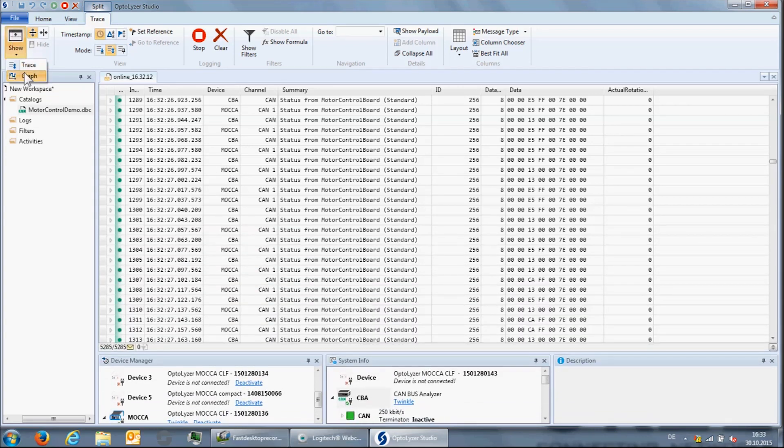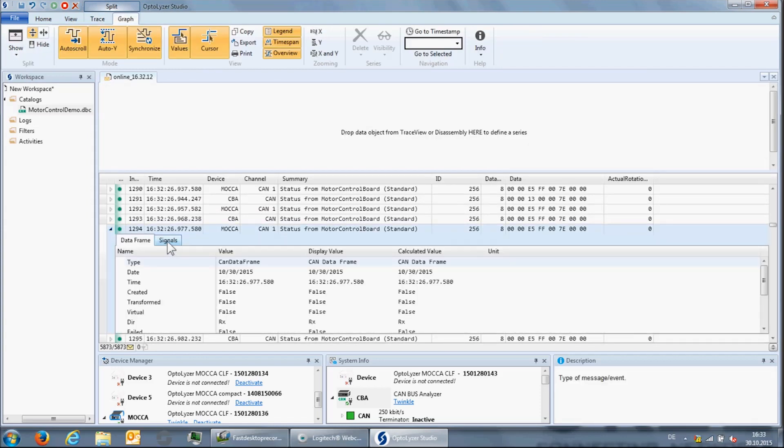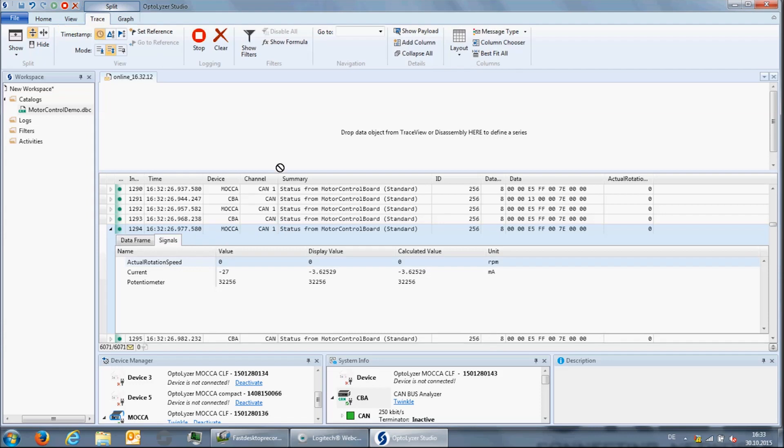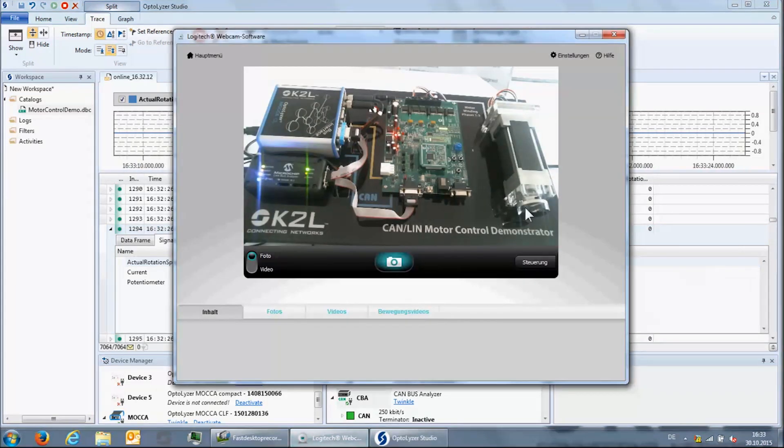Another handy way to find out what is going on in a system is the graph view that can be used to display signal values over time. As you can see, we can again use the detailed view to drag and drop signals into the graph view. Obviously, the motor is not running at the moment as the rotation speed is zero.